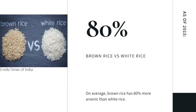As of 2015, brown rice has 80% more arsenic than white rice, meaning the brown rice plant absorbs more arsenic than white rice.